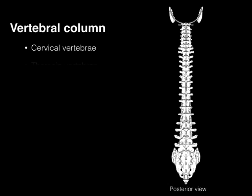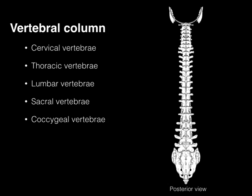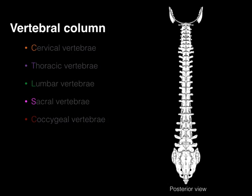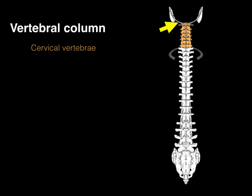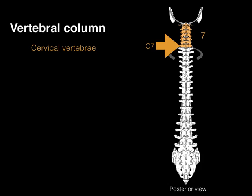The vertebral column is comprised of cervical, thoracic, lumbar, sacral, and coccygeal vertebrae. We often use just the first letter of each. The cervical vertebrae are in the neck — 'cervix' means neck. They're located between the base of the skull (the occipital bone) and the first rib, giving us seven cervical vertebrae: C1 through C7.